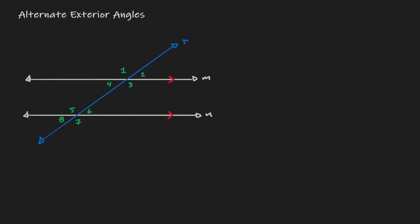Another type of angle that occurs in this situation is alternate exterior angles. We need to differentiate interior and exterior angles. Those angles within the two parallel lines — in this case angles five, six, four, and three — are the interior angles. Those angles outside of this interval are exterior, which in this case are angles one, two, eight, and seven.